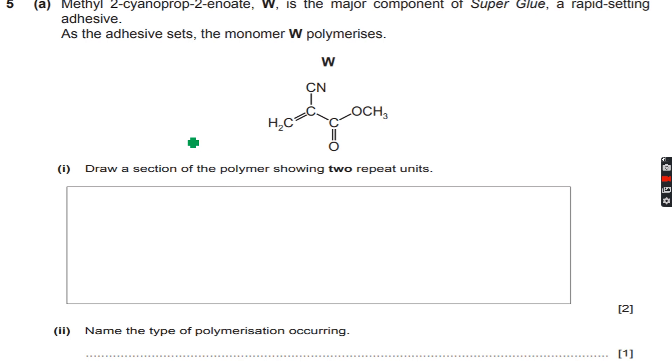Now methyl 2-cyanoprop-2-enoate W, which is given to us over here, is the major component of superglue. We just talked about superglue rapid-setting adhesive as the adhesive sets.